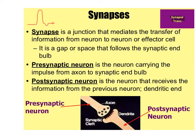When that action potential reaches the synaptic end bulbs of the neuron and releases its neurotransmitters, they go into what's called the synapse. Those chemical messengers — the neurotransmitters — migrate across that little space called the synapse. The synapse is just the junction that mediates the transfer of information from one neuron to the next; simply put, it's just the space between two neurons.